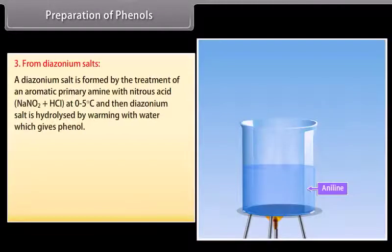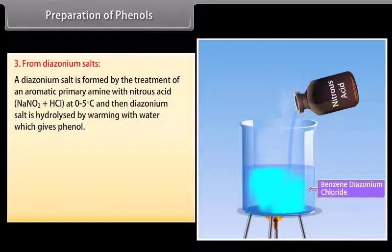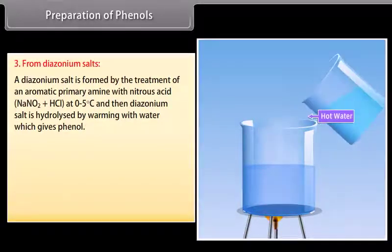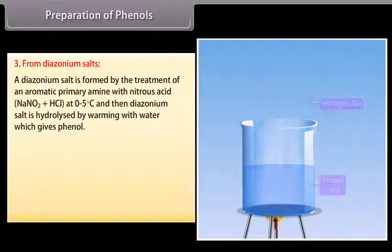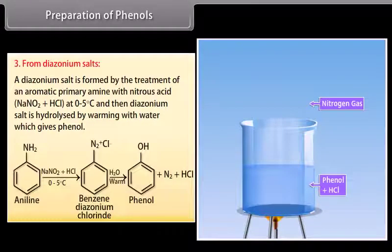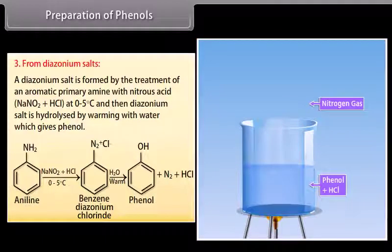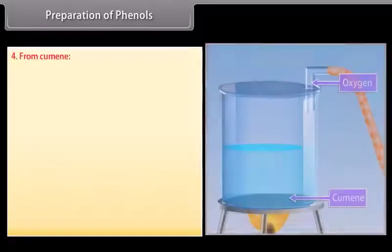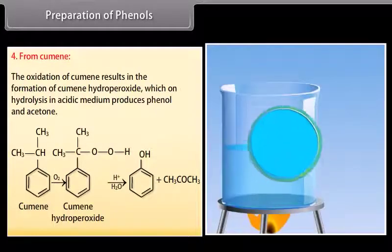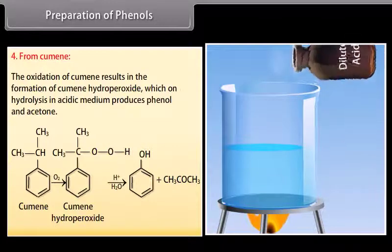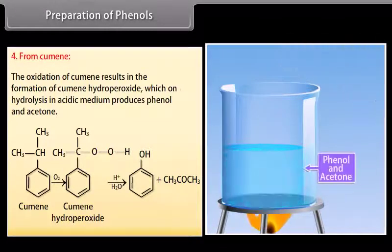Preparation of phenols from diazonium salts: a diazonium salt is formed by treating an aromatic primary amine with nitrous acid at 0–5°C; the diazonium salt is then hydrolyzed by warming with water to give phenol. For example, aniline treated with nitrous acid gives benzene diazonium chloride, which on warming with water gives phenol, nitrogen and hydrochloric acid. From cumene: oxidation of cumene gives cumene hydroperoxide, which on hydrolysis in acidic medium produces phenol and acetone.